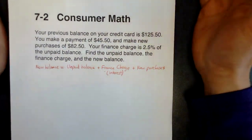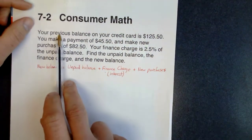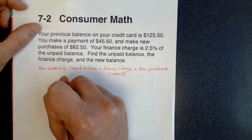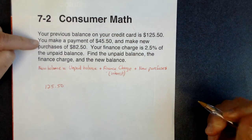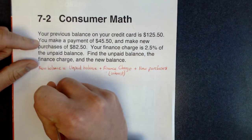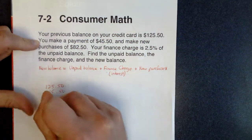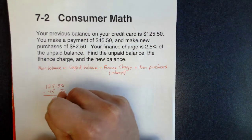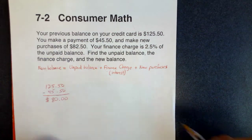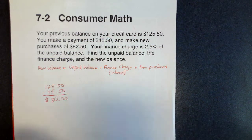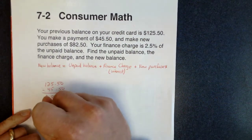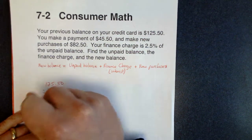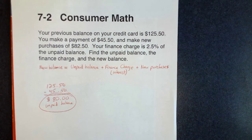The unpaid balance is the amount you still owe on your credit card. From the previous month, we still owed $125.50, but we made a payment of $45.50, so we're going to take that money off. We no longer owe the $45.50 that we paid them. When you subtract these, you come down to $80.00. That's going to be your unpaid balance — that's the first answer they want.